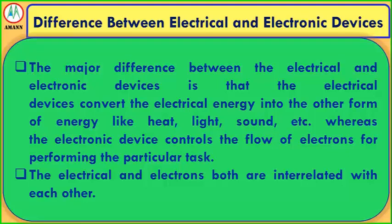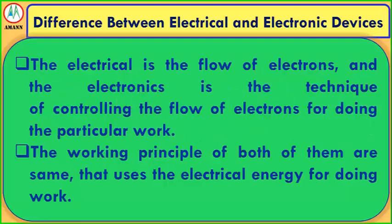Electrical and electronics are both interrelated with each other. Electricity is the flow of electrons, and electronics is the technique of controlling the flow of electrons for doing particular work. The working principles of both are the same — they use electrical energy for doing work.